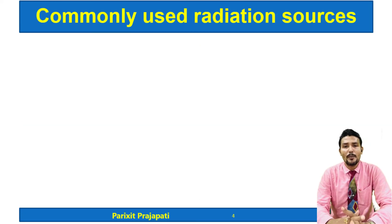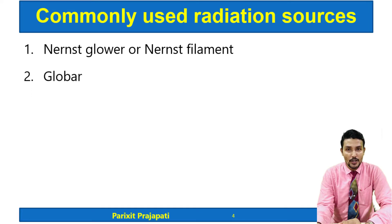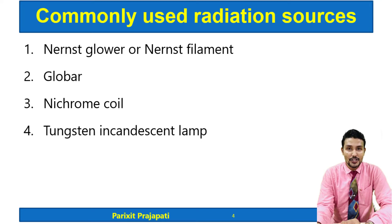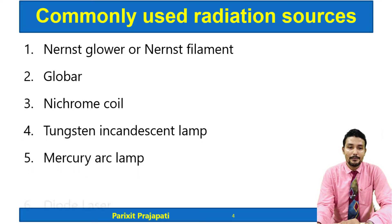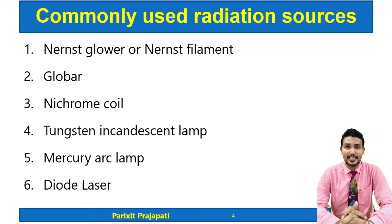The commonly used IR radiation sources are: Nernst Glower or Nernst filament, Globar source, Nichrome coil or Nichrome wire, tungsten incandescent lamp, mercury arc lamp, and diode laser. We will see each of these sources one by one.